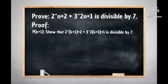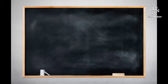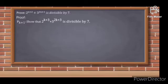The last step is to show that 2 to the power of (k+1)+2 plus 3 to the power of 2(k+1)+1 is divisible by 7. We simplify (k+1)+2 to get k+3, and 2(k+1)+1 becomes 2k+3. So we need to show that 2 to the power of k+3 plus 3 to the power of 2k+3 is divisible by 7.